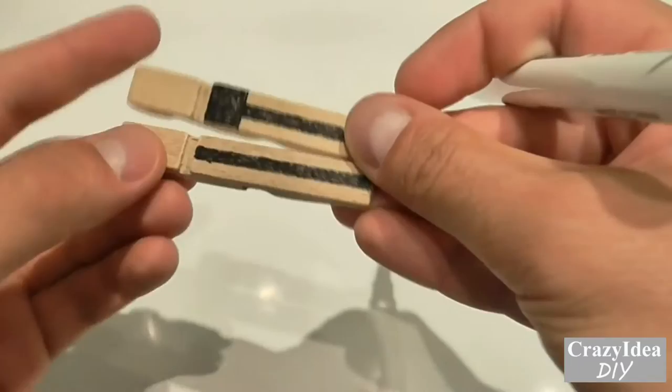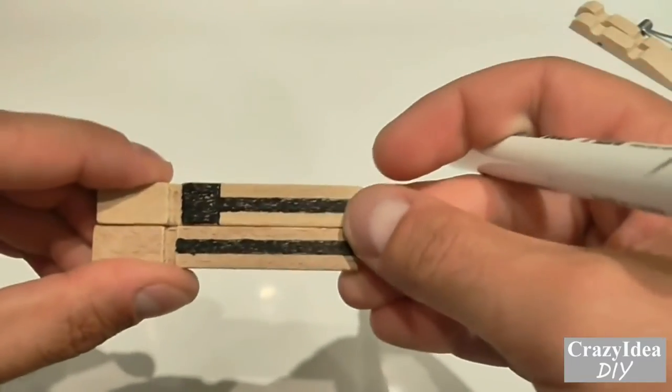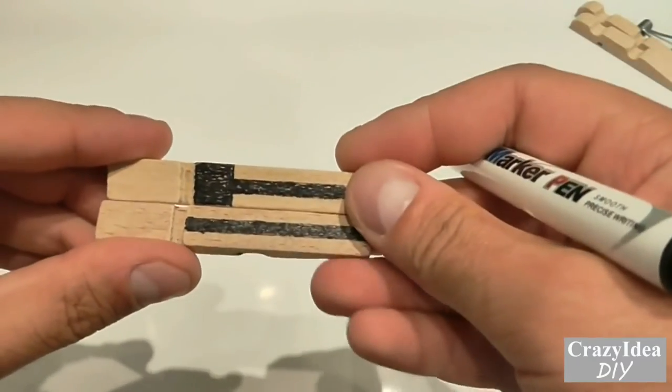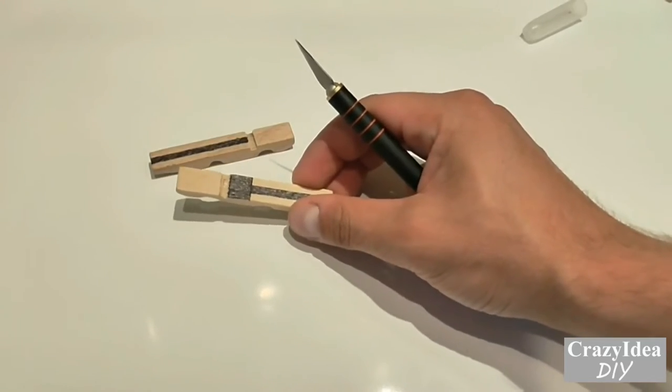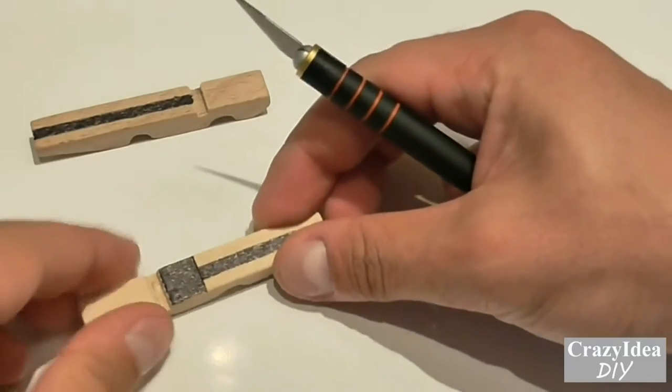On the inside it should look like this. Now let's cut out the pieces we have marked.